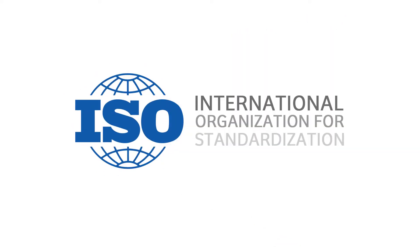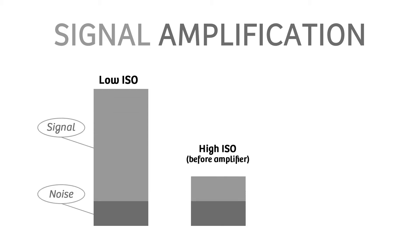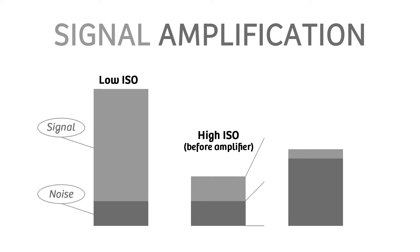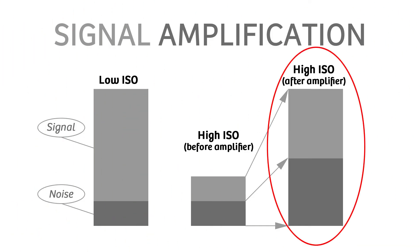ISO is an abbreviation for International Organization for Standardization. ISO sets the amount of light sensitivity for the camera sensor. In other words, it amplifies the signal. The higher the ISO, the higher the amplification factor of the sensor.